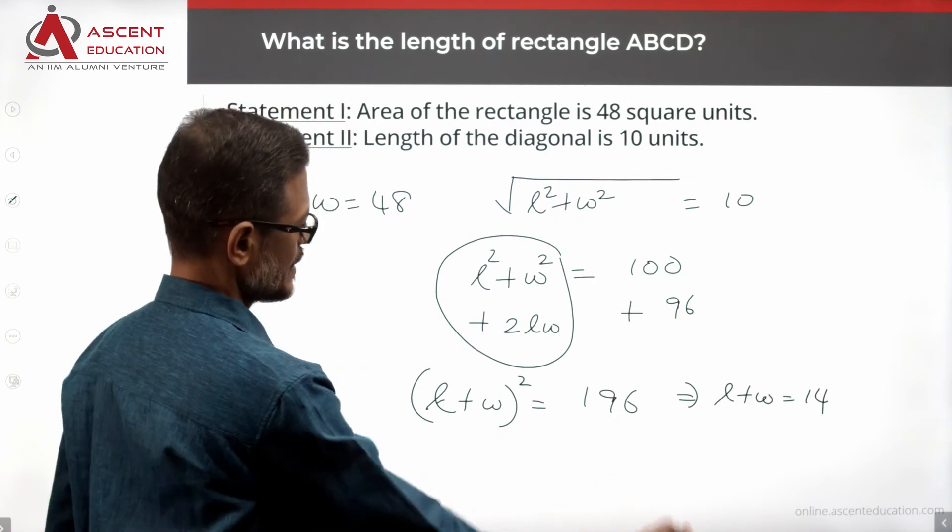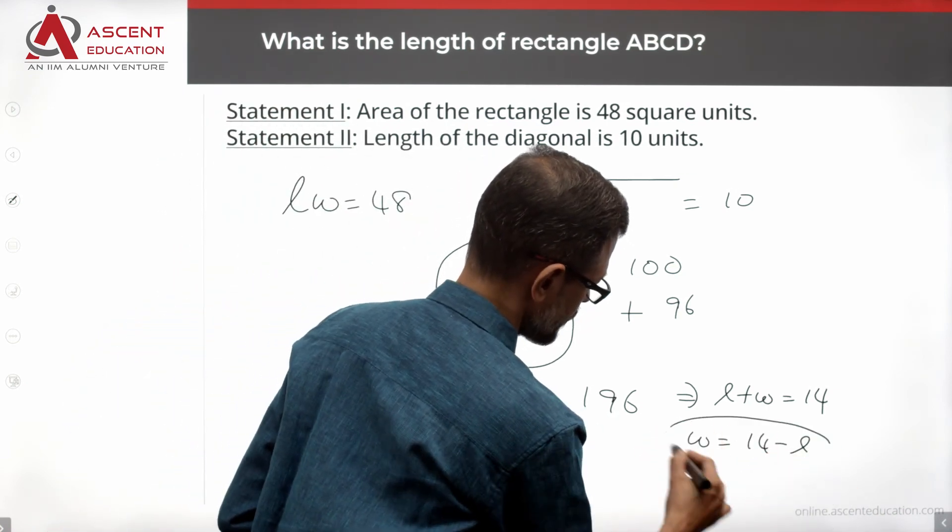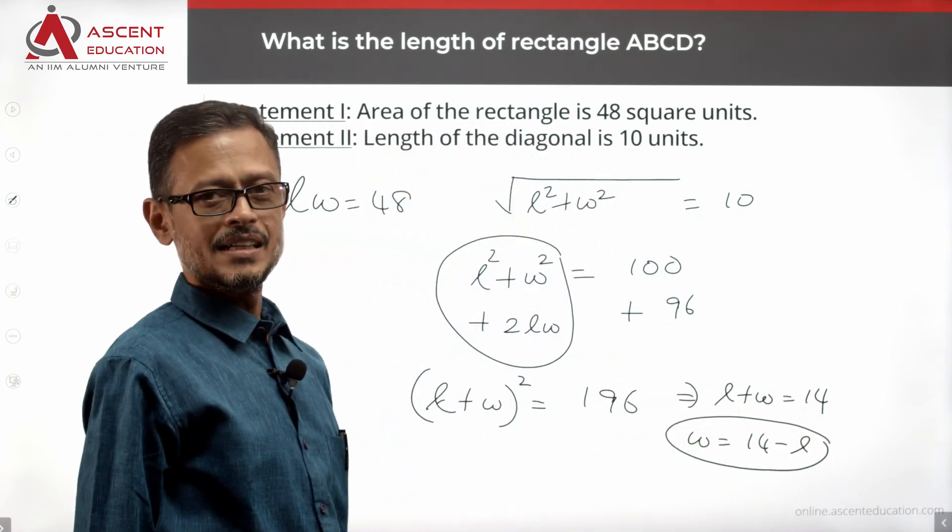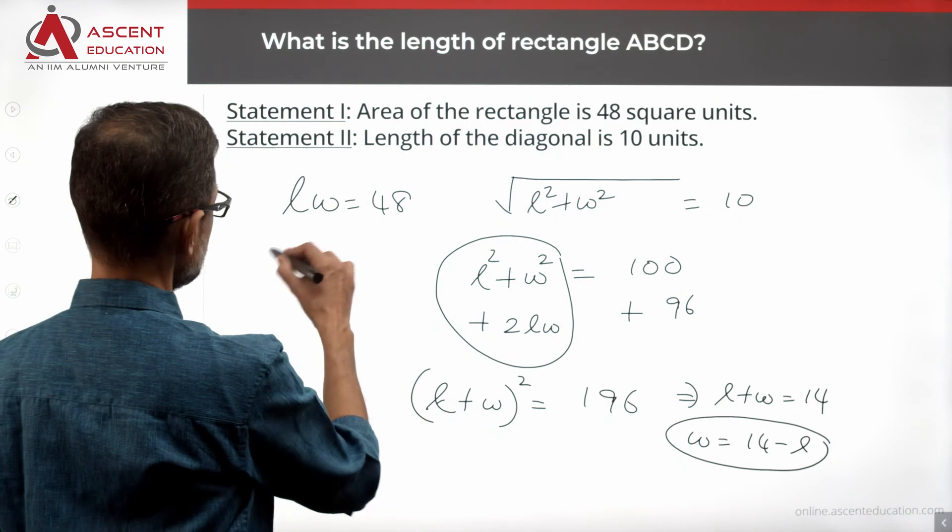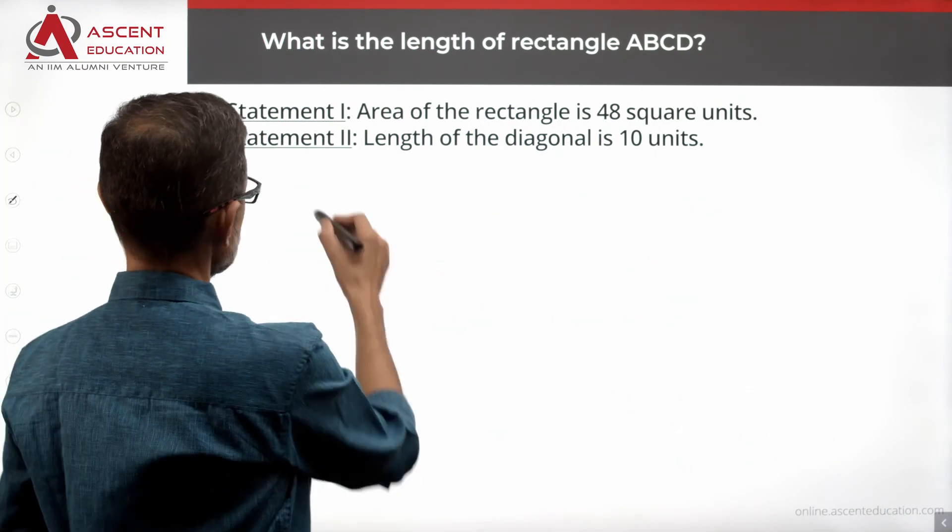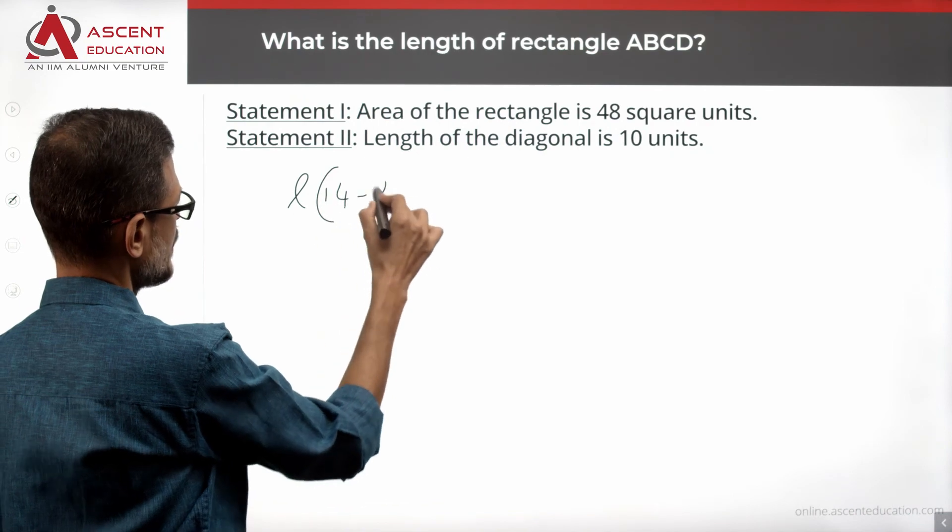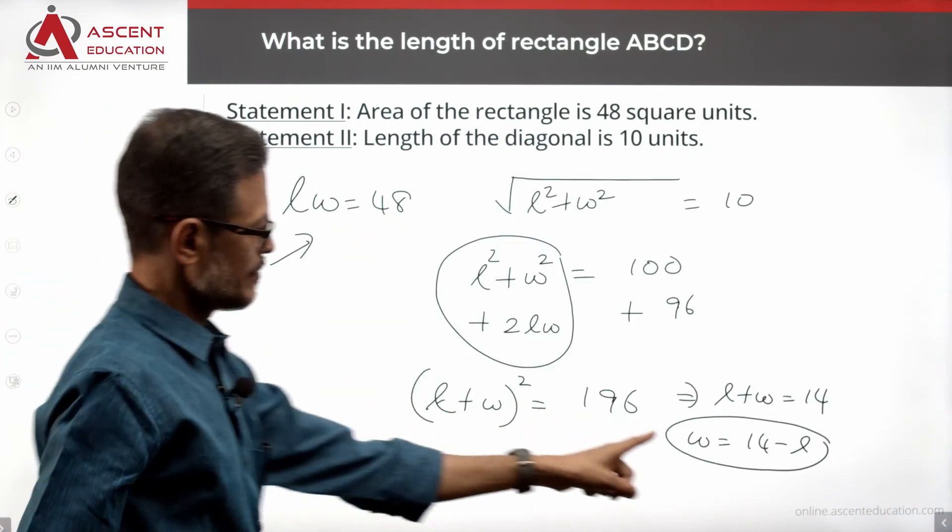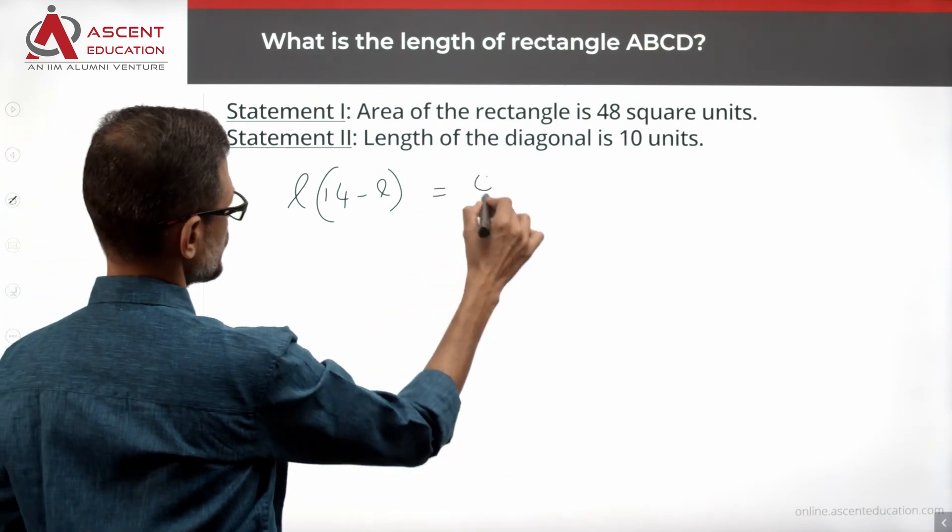L plus W is equal to 14. If we rewrite it, we will get W is equal to 14 minus L. Now, I am going to substitute this into the equation. Length into width, length into 14 minus L. Width is equal to 14 minus L. That is equal to 48.